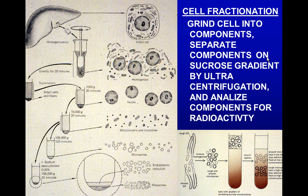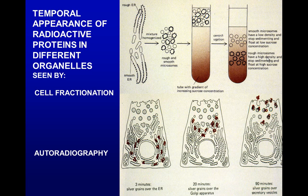Palade also used cell fractionation, grinding up cell components to separate them in a sucrose gradient. Different concentrations of sucrose are in the tube; cell fragments are loaded on top and then ultracentrifuged at really high speed. This yields heavy vesicles from the rough endoplasmic reticulum and smooth vesicles from the Golgi apparatus, allowing researchers to look for proteins in each of these two fractions.